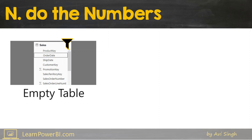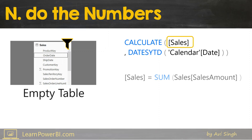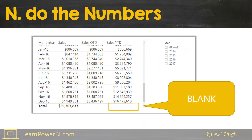Here we have our result table, and now we go back and do the numbers — the math — which is Sales, simply the SUM of Sales Amount. But since it's operating on an empty table, the result is blank, and that is what's returned.